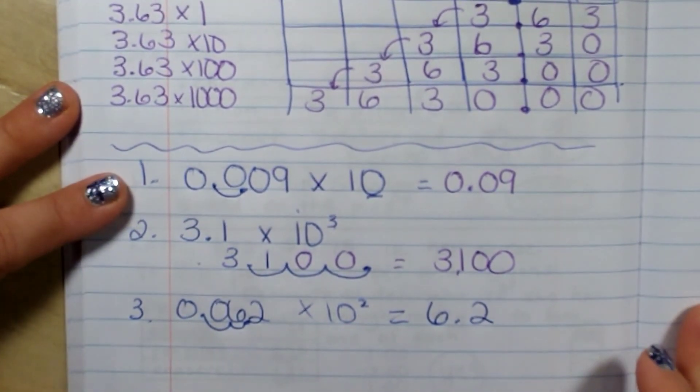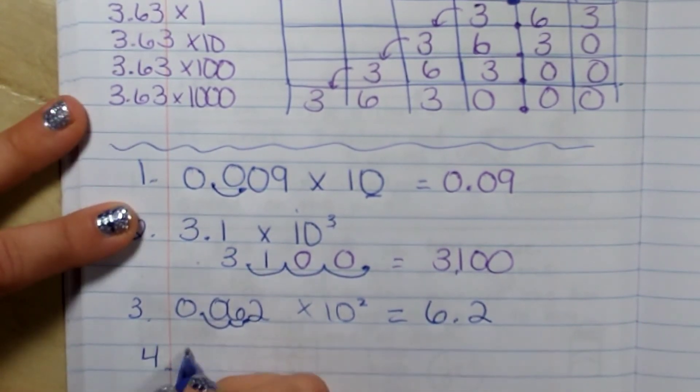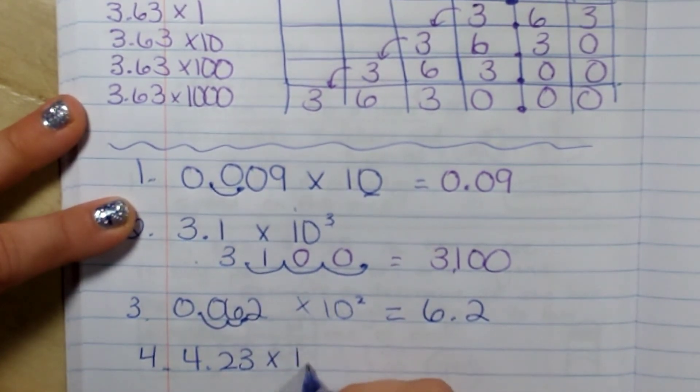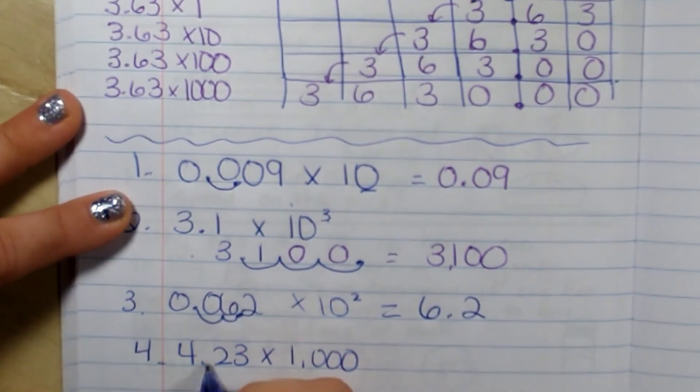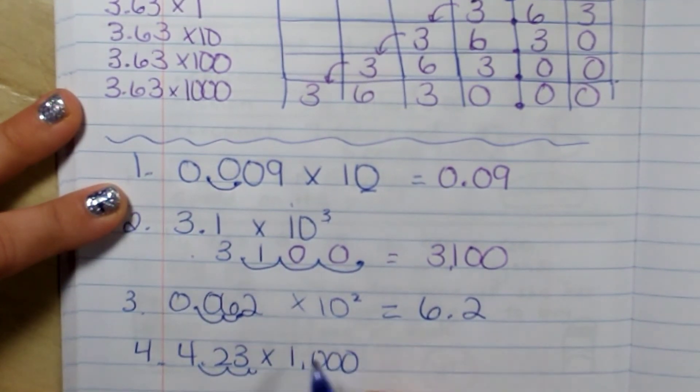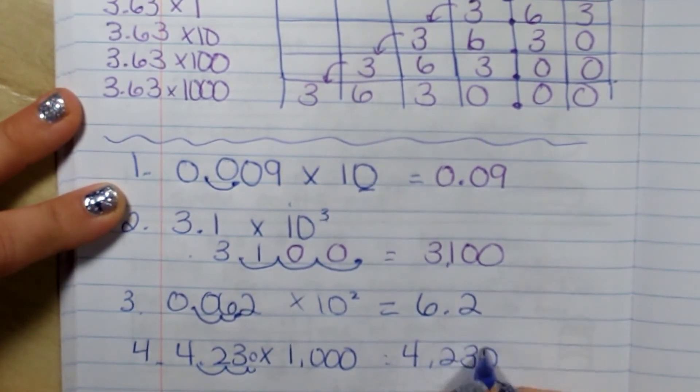Now we're going to do one more. Four and twenty-three hundredths times one thousand. So I would move it over three places. One, two, three. Add the zero. It is four thousand two hundred and thirty.